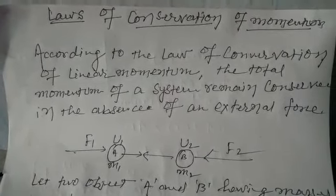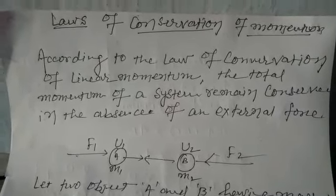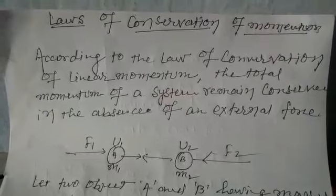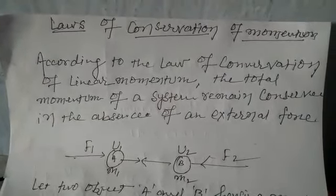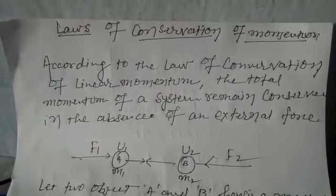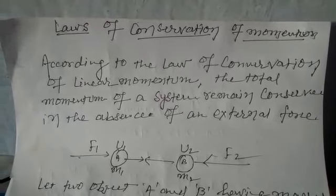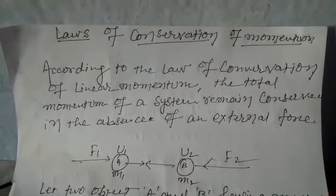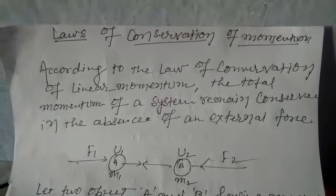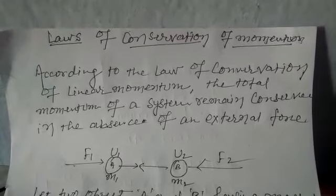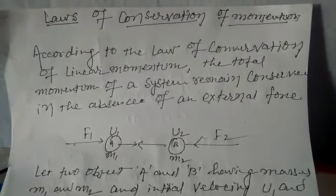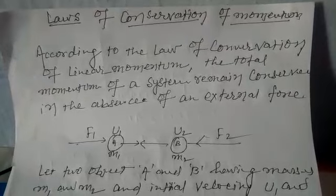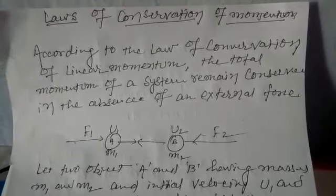According to the law of conservation of linear momentum, the total momentum of the system remains the same in the absence of an external force. Before the collision and after the collision, momentum remains the same. Consider two objects A and B having masses M1 and M2 and initial velocities U1 and U2 respectively. After collision, the final velocities of both bodies become V1 and V2.